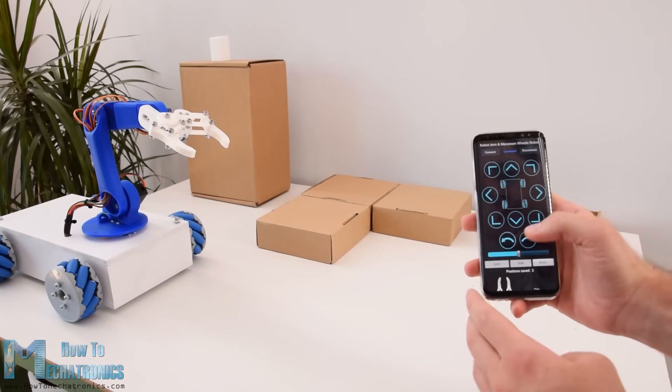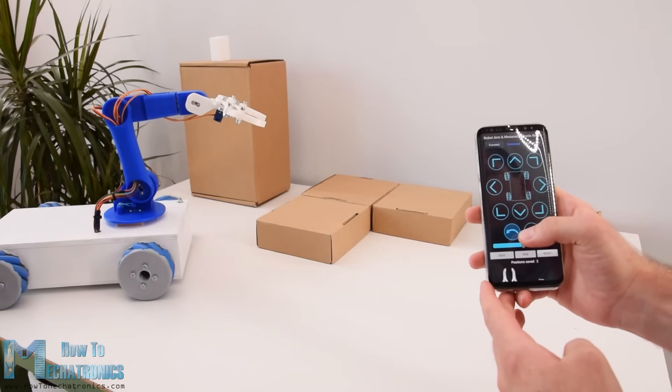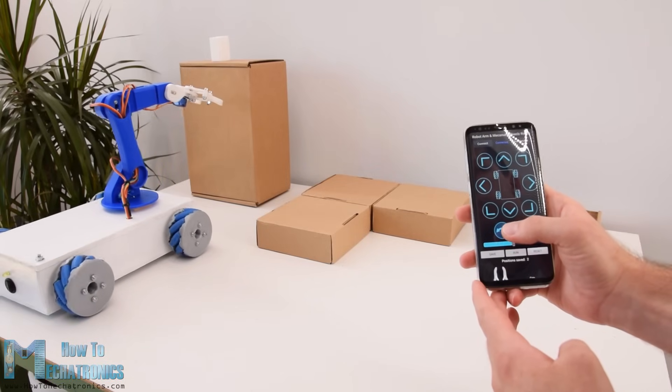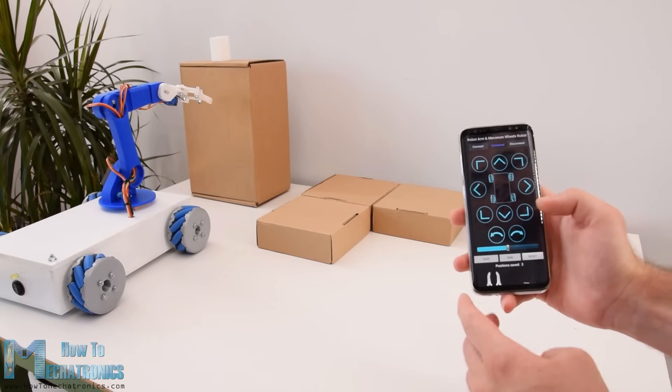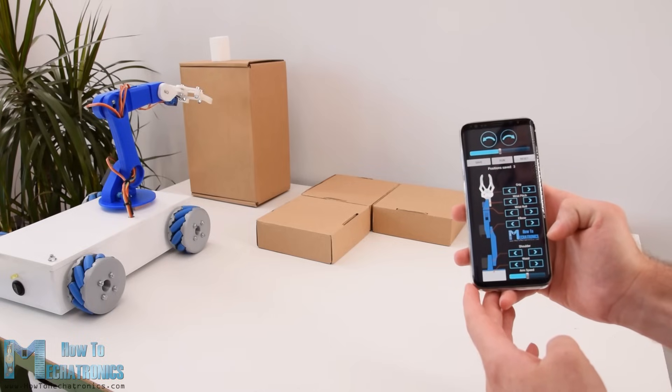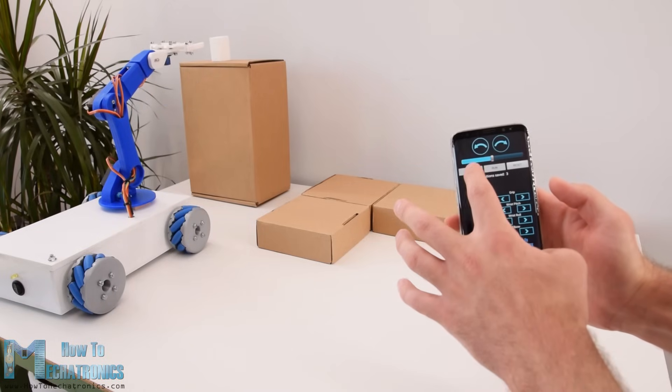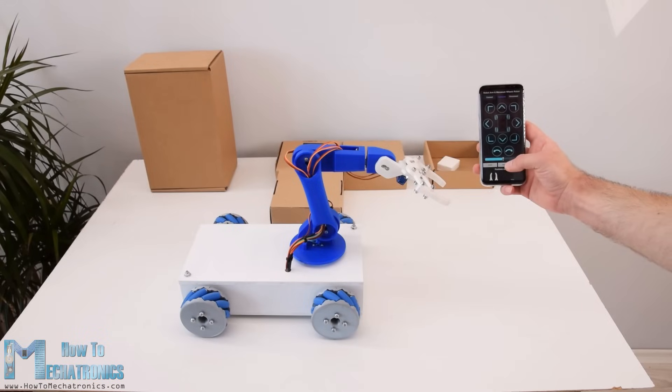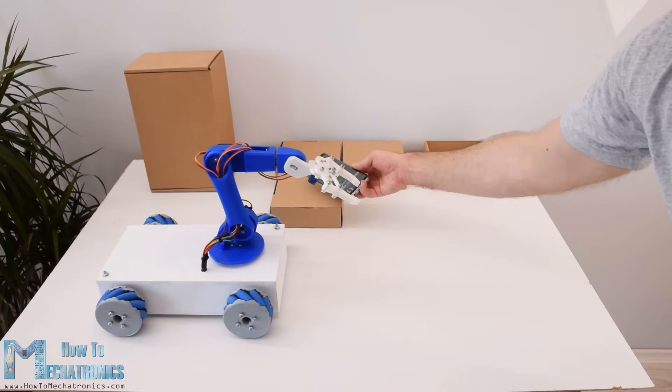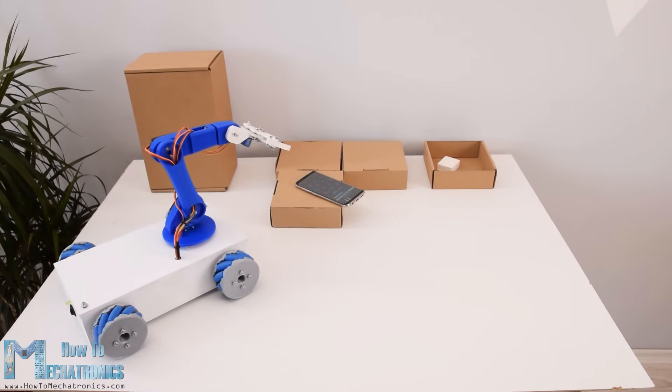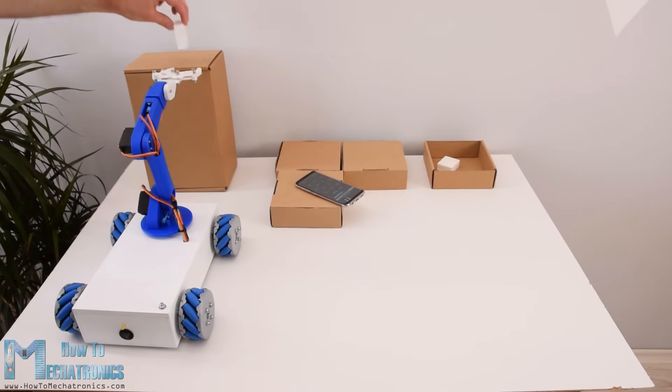Nevertheless let's take a look at, in my opinion, the coolest feature of this robot and that's the ability to store the movements and then automatically repeat them. Using the Save button we can simply store the positions of the motors for each step. Then we just need to click the Run button and the robot will automatically repeat the stored movements over and over again.